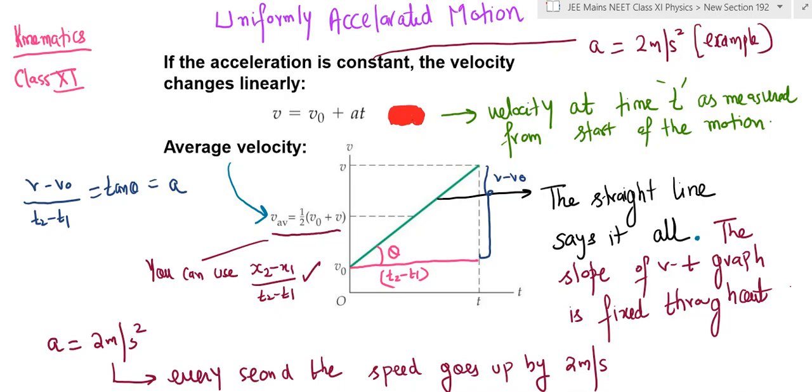If you notice this graph, it's a straight line of v versus t, inclined at an angle theta with the x-axis. This is in the first quadrant, and you can see the velocity is increasing.